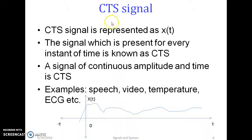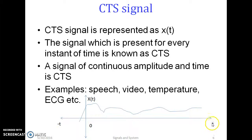First category is CTS and DTS signal. A continuous time signal is defined as a signal which is present for every instant of time, represented as x(t). A signal of continuous amplitude and time is also known as CTS. Examples are speech, video, temperature, ECG etc. When drawing a continuous time signal, the x-axis represents the independent variable t and the y-axis represents the dependent variable x(t). A signal present for every instant of time is a CTS signal.